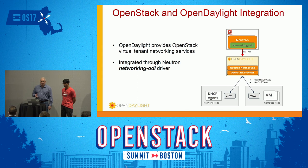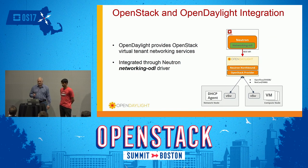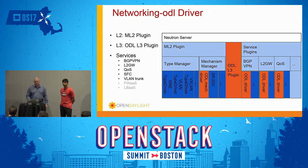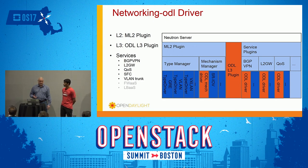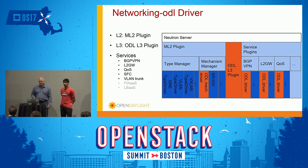Looking at how OpenDaylight integrates with OpenStack: there is a Neutron provider and Neutron backend. There's a networking-ODL project and plugin that resides within OpenStack. It talks to OpenDaylight over a REST API and provides the networking services for Neutron and the OpenStack scheduled workloads. The networking-ODL driver is composed of a set of different components: an ML2 plugin to handle L2, an L3 plugin, and a set of service plugins. Together, this is really the API — the interface between OpenStack and OpenDaylight.